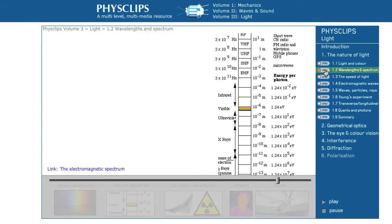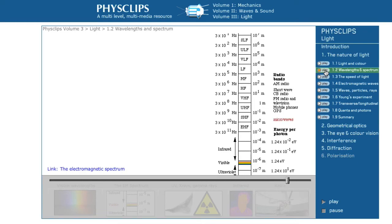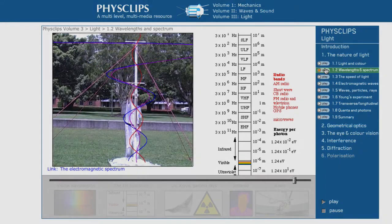At successively longer wavelengths, we find microwaves and a huge spectrum of radio waves.